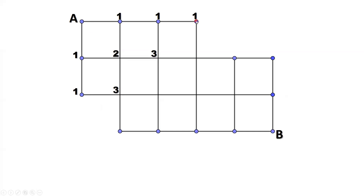Similarly, for this point, you don't have a top point — you only have the point on the left. So one plus zero equals one. Following the same idea, we can easily figure out all the numbers. These numbers equal zero plus three equals three. This point equals three plus three equals six. Three plus one equals four.